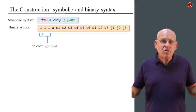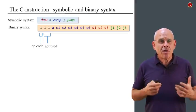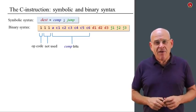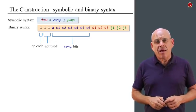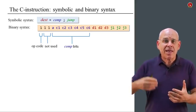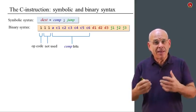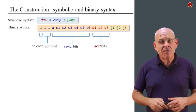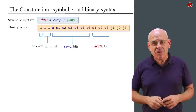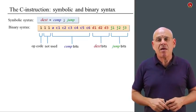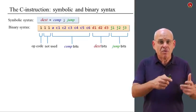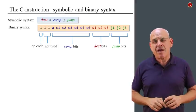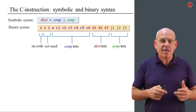Then we have two bits which we don't use, and by convention we set them to 1. The next seven bits taken together specify what is the computation that I want to achieve. These are the control bits that will be sent to the ALU. The next three bits represent the destination. And finally, the last three bits represent the jump condition. This is the different fields of the instruction in its binary flavor.